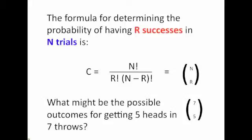The formula for determining the probability of having r successes in n trials is given by this. C gives us the number of times it will happen, and we want to know the number of trials that we will wind up with r successes in n total trials. It's given by the formula n factorial divided by r factorial times n minus r factorial.